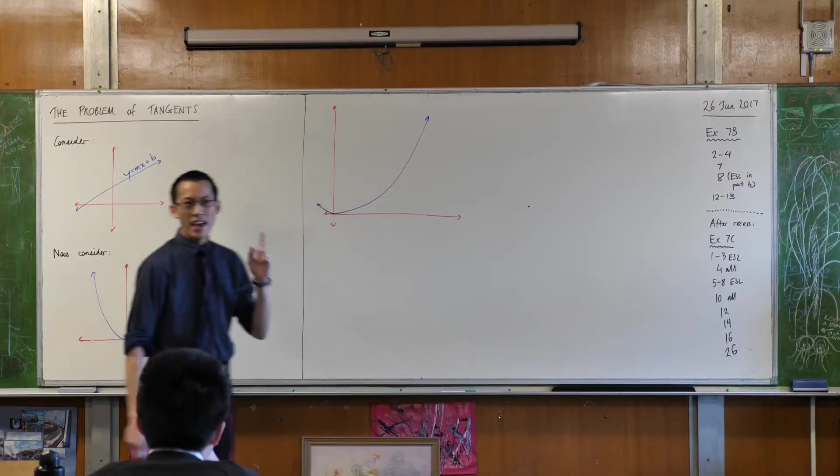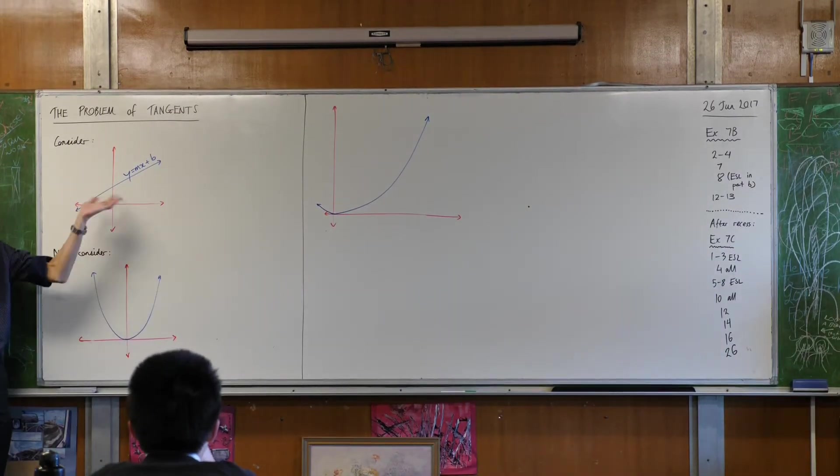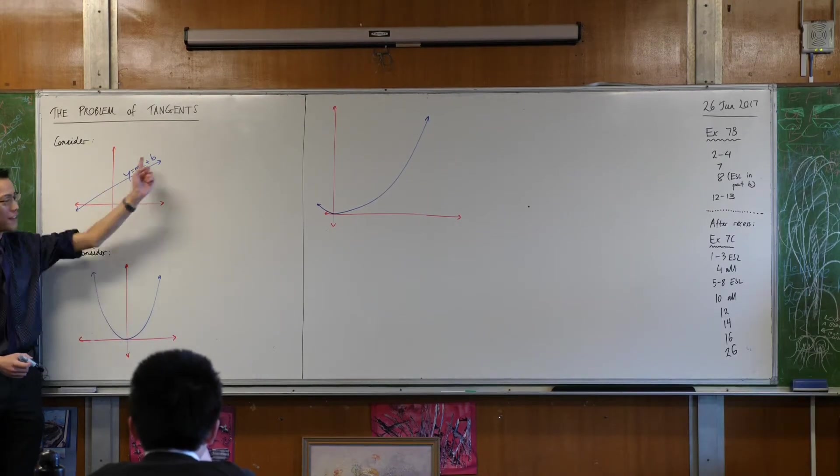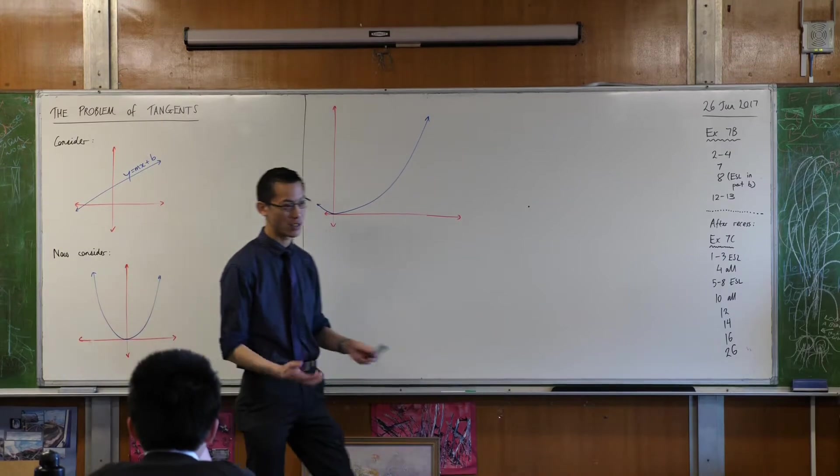Let's think back a little bit. If you have a function like this, like a straight line, we know if you have it in a form like this, it's really easy to find its gradient.